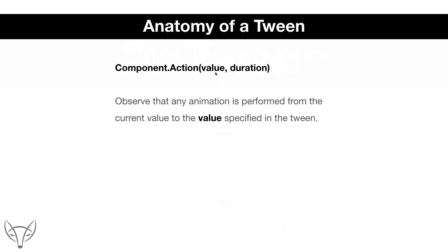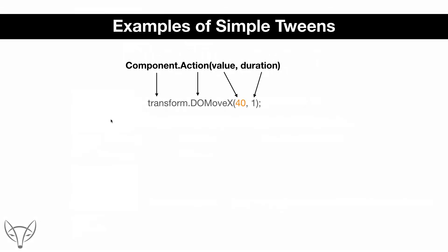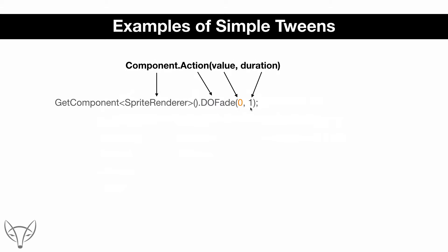The value we specify in our tween is a target value. Observe that an animation is performed from the current value to the value specified in the tween. For example, the component is transform, the action is DoMoveX, the value is 40, and the duration is 1 second.